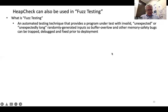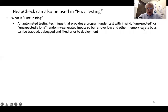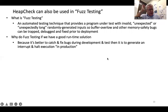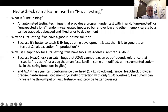HeapCheck can also be used for fuzz testing, where fuzz testing is an automated testing technique that provides a program under test with invalid, unexpected, or unexpectedly long randomly generated inputs, so buffer overflow and other memory safety bugs can be trapped, debugged, and fixed at development and test time prior to deployment. One might ask why use HeapCheck for fuzz testing since we have tools like AddressSanitizer. The answer is because HeapCheck can catch bugs that ASAN cannot — for example, an out-of-bounds reference that misses its red zone, or a bug that manifests itself in unmodified, uninstrumented code like the string functions in GLibC.